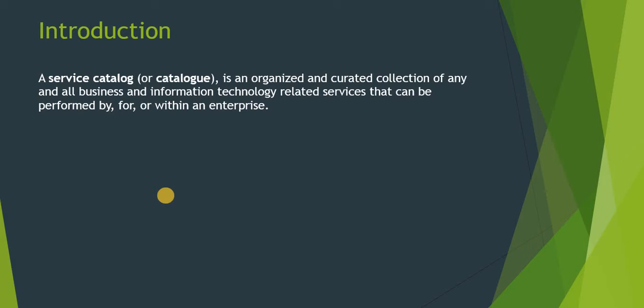First of all, the introduction: what is a service catalog? A service catalog is an organized and curated collection of any and all business and information technology related services that can be performed by, for, or within an enterprise. For example, if you want to order a laptop or a keyboard, it is presented in a catalog on your intranet or portal. Basically, it's like an e-commerce site where you can view what is present and order as you like.